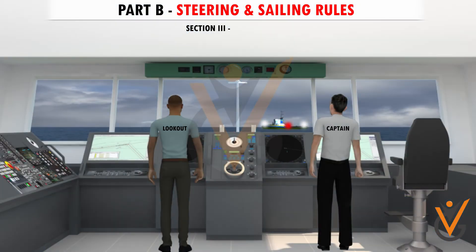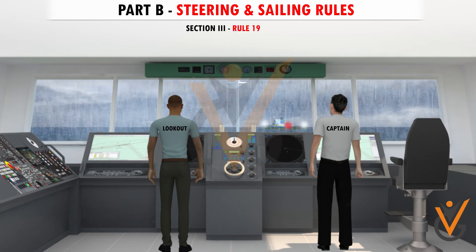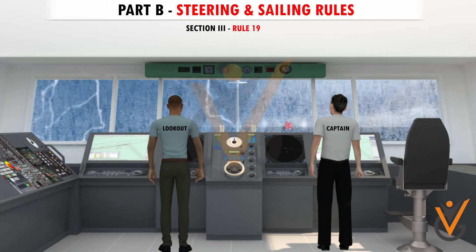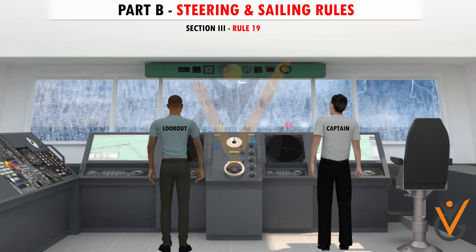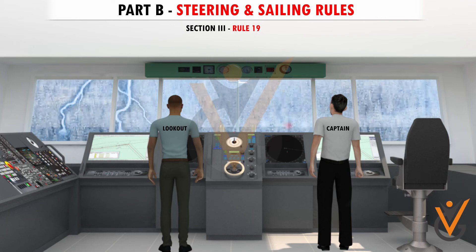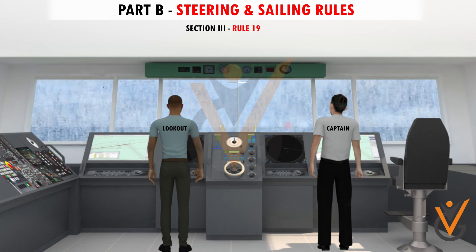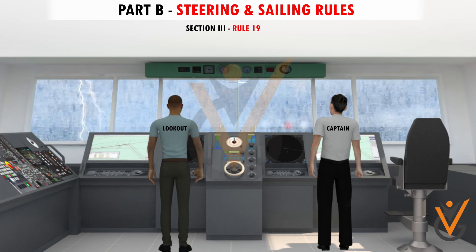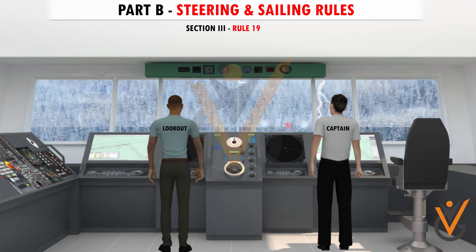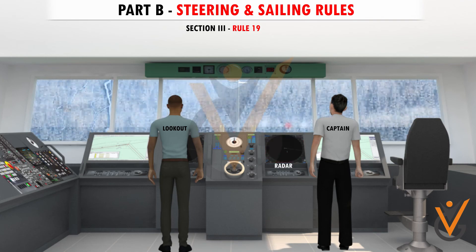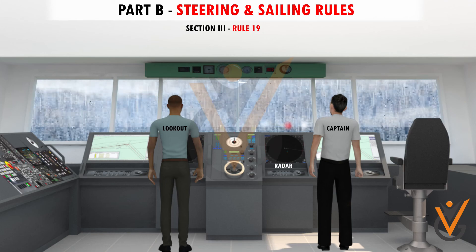Section 3: Conduct of vessels in restricted visibility. Rule 19 outlines the conduct of vessels in restricted visibility — fog, mist, falling snow, heavy rainstorms, sandstorms, or any other similar conditions. In restricted visibility, a vessel shall proceed at a safe speed, keep her engines ready for immediate use, and keep radar operational. Maintain a good all-round lookout.